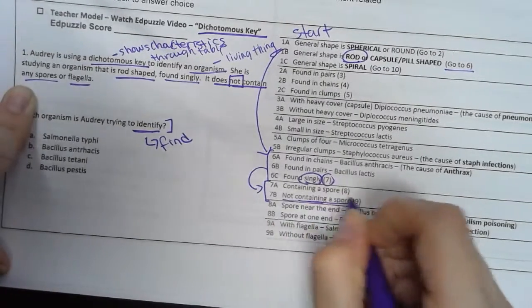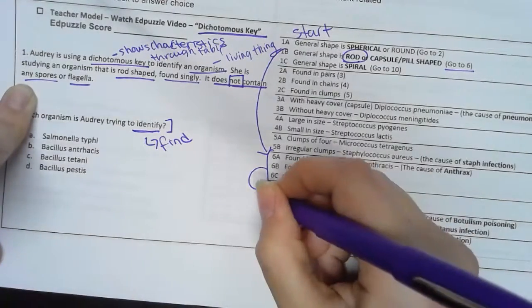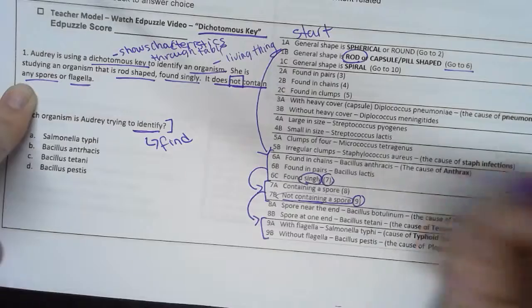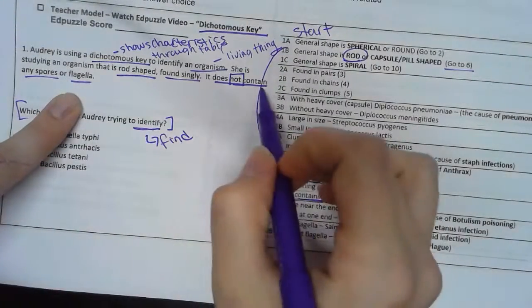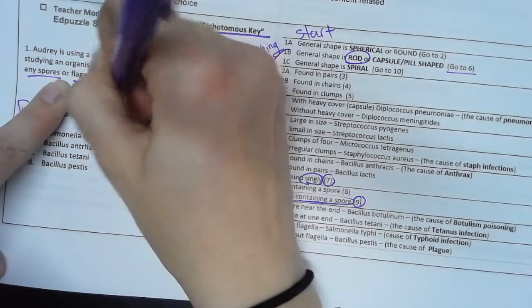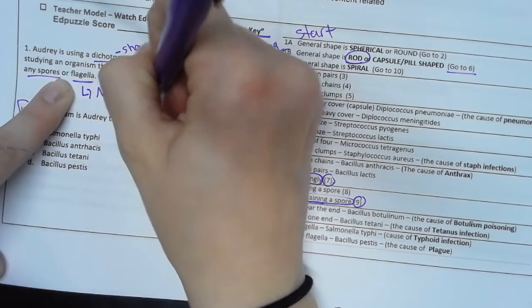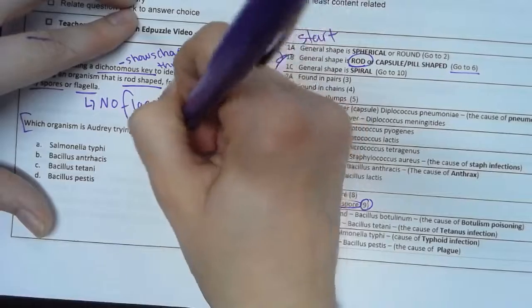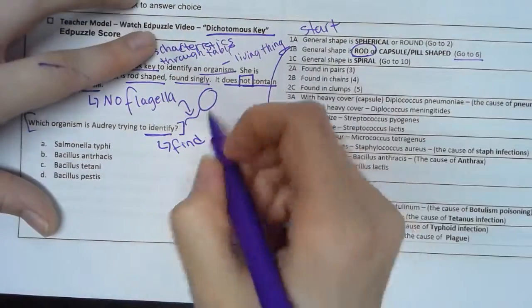Okay, and then 'does not contain any spores or flagella' - this means that it does not have a flagella. No flagella. Also, flagella is just that little thing that helps you move on a bacteria. Flagella is for movement, in case you were curious - fun fact.